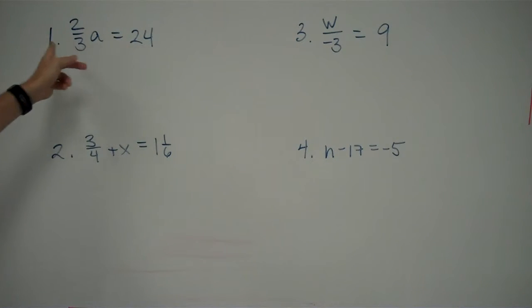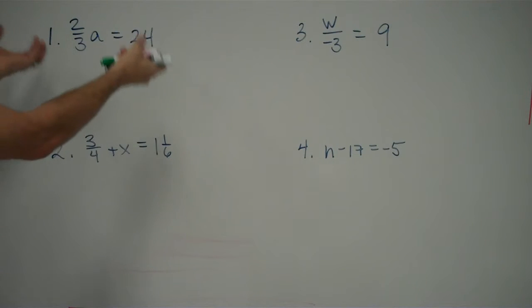You can think of an algebraic equation as being something like a seesaw. You put a kid on one side of the seesaw, you better put another kid on the other side to keep it in balance. Not only that, those kids better be pretty much the same size, otherwise it's going to get out of balance. The exact same thing is true here.